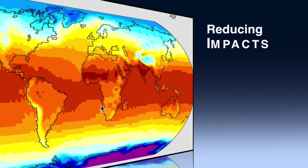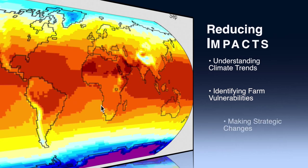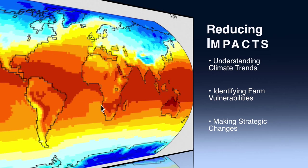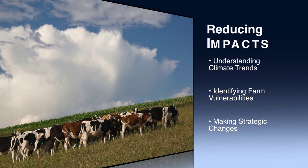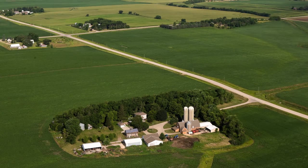Reducing these impacts requires three things: understanding local, regional, national, and international climate trends; identifying farm-specific vulnerabilities to these trends; and making strategic changes on the farm to minimize these impacts. This lecture presents an overview of some of the climate impacts, but more importantly describes a systematic approach to identifying the impacts and assessing farm vulnerability to these climate changes.